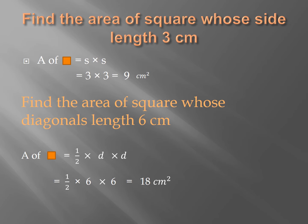Next example: find the area of square whose diagonal length is 6 cm. You are given the diagonal length, so you use the rule for area of square by the diagonal. Equal half times diagonal times diagonal, equal half times 6 times 6 equals 18 cm².